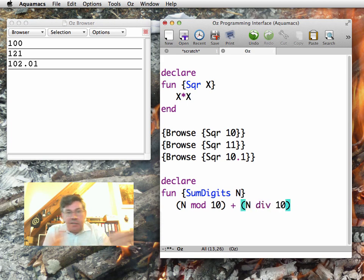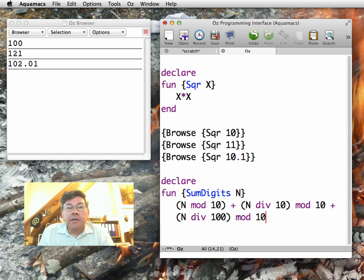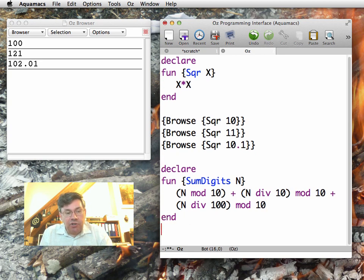Then I can do n div 100 mod 10. This gives me the upper digit of the three-digit number. This expression is a bigger one, and I don't want to write it over and over again when I calculate sum digits.